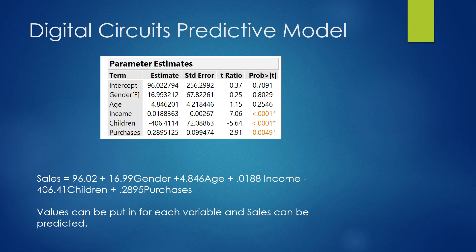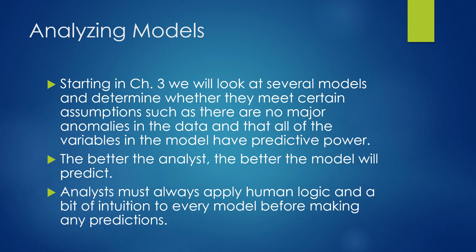Our predictive model tries to predict sales. The model is: 96.02 plus 16.99 times gender, plus 4.846 times age, plus 0.0188 times income, minus 406.41 times number of children, plus 0.2895 times purchases last year. Gender is a nominal variable coded with a zero or one, with a legend explaining which value represents male or female. We then input a customer's age, income, number of children, and dollar purchases from last year.